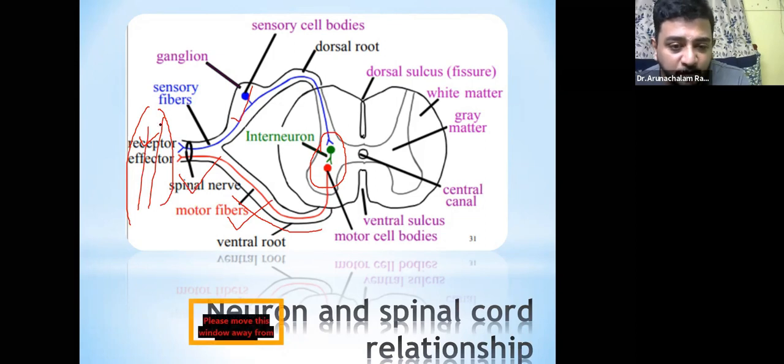So how many? Receptor is one. Sensory nerve fiber is two. The spinal integrity is three. The motor nerve is four, and the effector organ, the muscle, that is five.